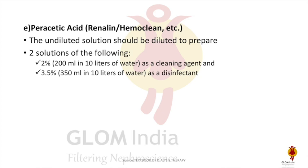Peracetic acid is generally an undiluted solution and needs to be diluted: to 2% as a cleaning agent or 3.5% as a disinfectant. To prepare a 2% solution, 200 ml is used in 10 liters of water, and to prepare a 3.5% solution, 350 ml of peracetic acid is dissolved in 10 liters of water.